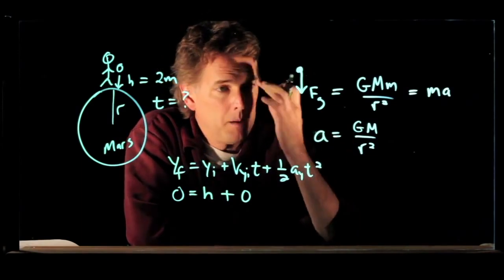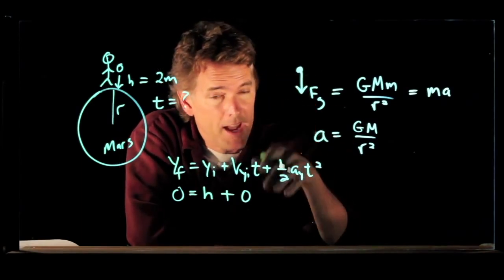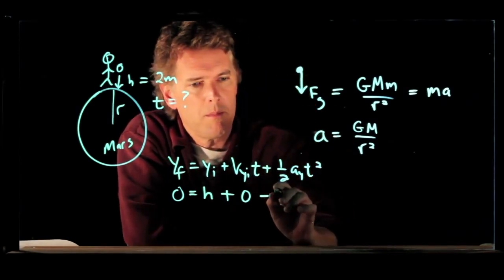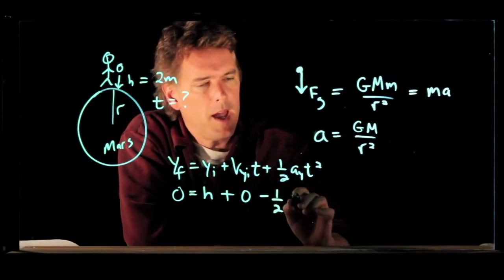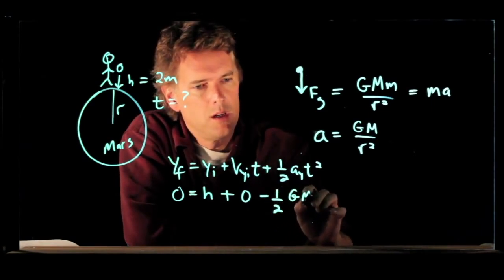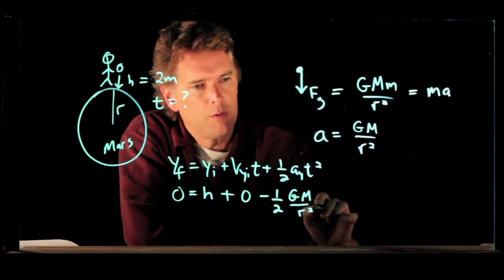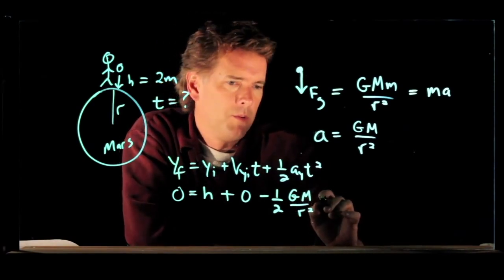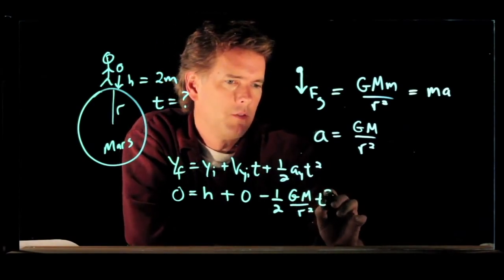Acceleration is that, but it is of course downwards and so we need to include a minus sign. And we have big G big M over r squared and we're going to multiply that by t squared.